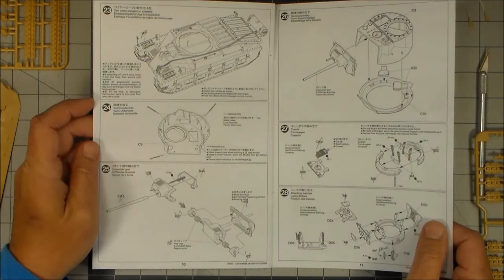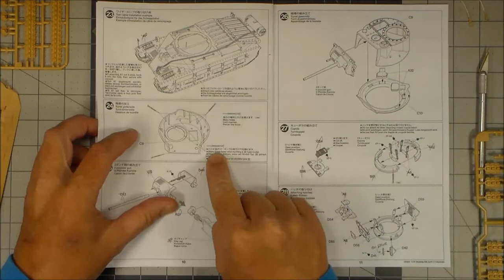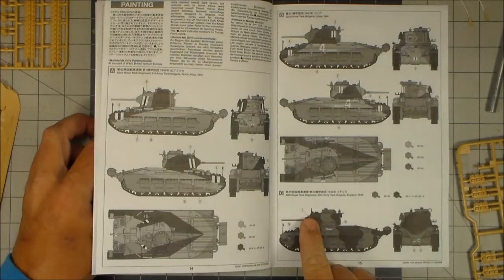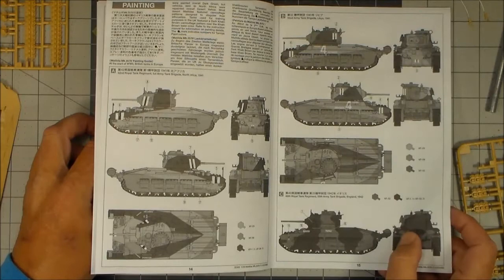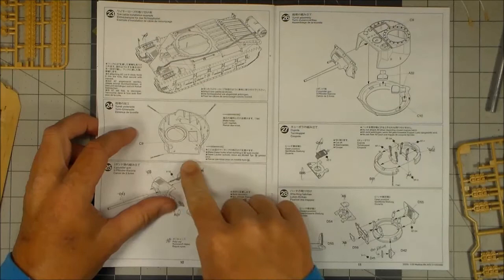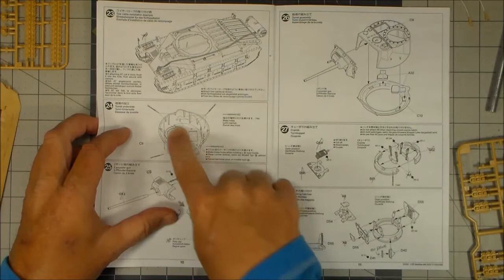For instance, pay close attention to all these instructions here. For instance, right here, it says make these holes when building a C-type model. Which means, this one right here, 49th Royal Tank Regiment in England in 42. If you are building the other versions, they don't have some of the parts. So you don't want to go poking holes in it if you don't need to. Because you have to drill holes out.